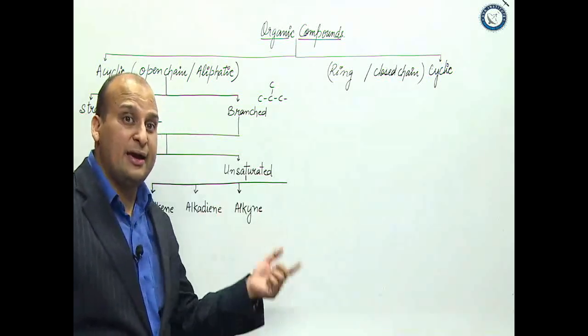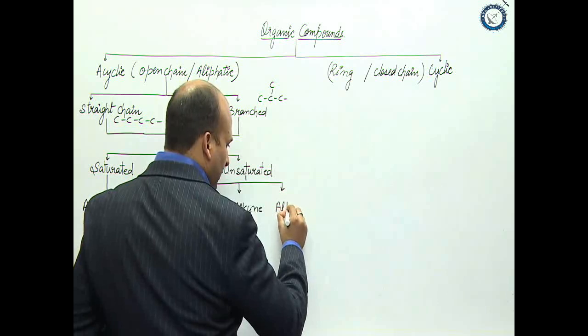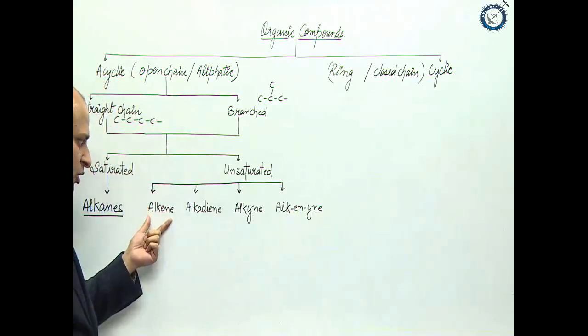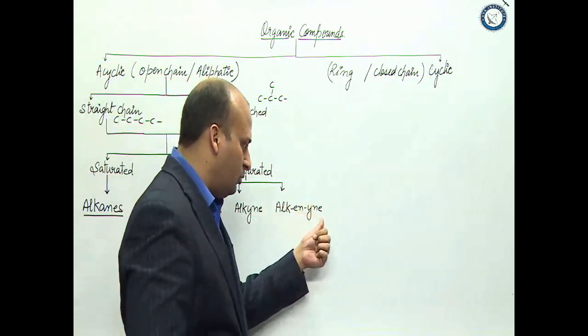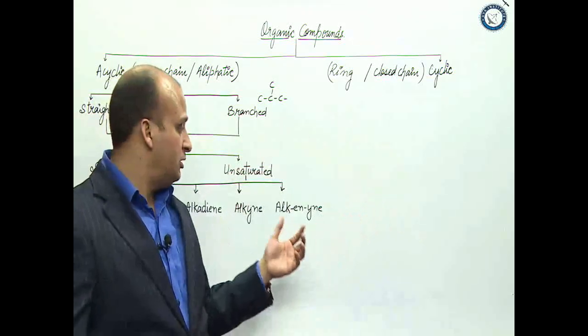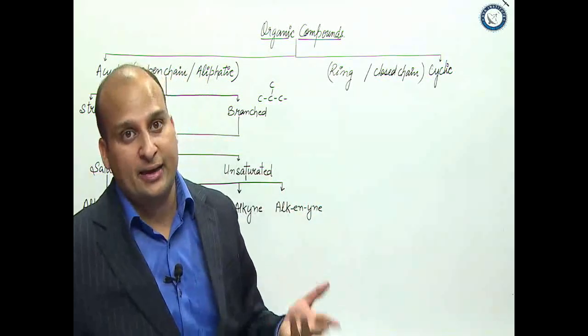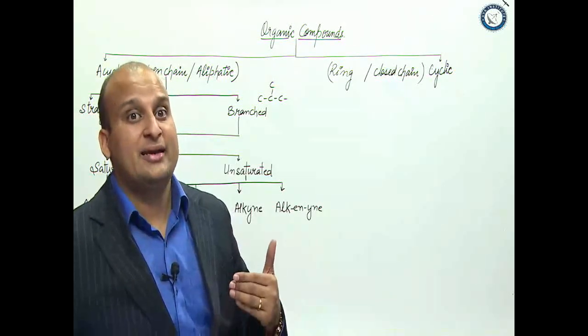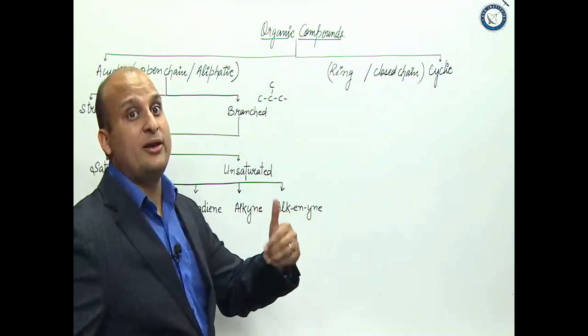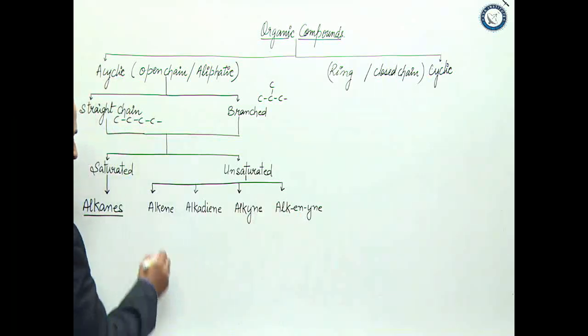If there are two triple bonds, then alkadiene. If there is one double and one triple bond, then alkenyne. If there are more than two double bonds, it is polyenes. If there are more than two triple bonds, it is alkapolyines. Simply write: one double bond, two double bonds, one triple bond, one double and one triple bond.